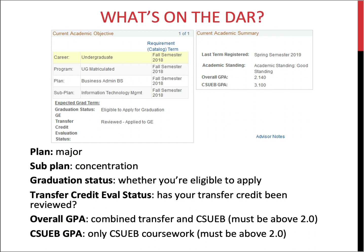Next is the sub plan, which is either a concentration for your major or indicates if you've declared a minor. At the bottom of the top box, your graduation status will show whether you're eligible to apply for graduation, and once you have applied, what your status is in the evaluation process.